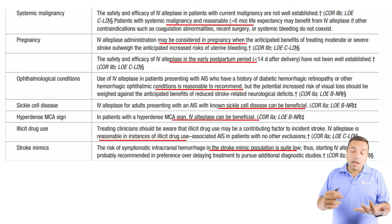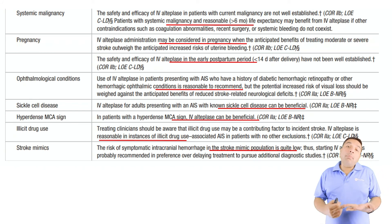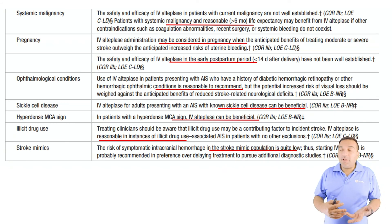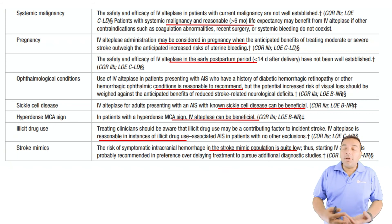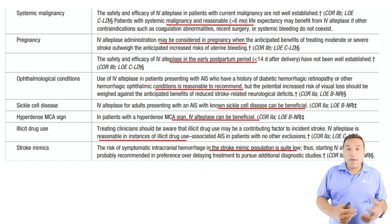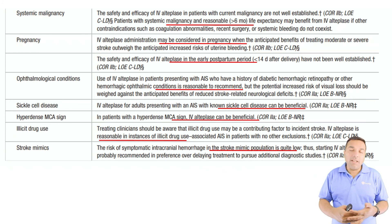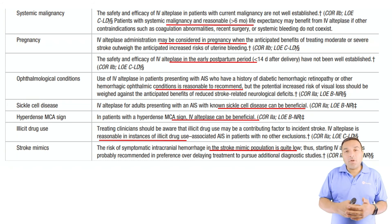Sickle cell disease: go ahead and give TPA. Hyperdense MCA sign: go ahead and give it. Illicit drug use — cocaine, methamphetamine — can cause vasospasm or arrhythmia leading to clot in the brain. In all those situations you should consider giving TPA. It is not a contraindication, though it does increase bleeding risk. The level of evidence is C, but the class of recommendation is 2a.